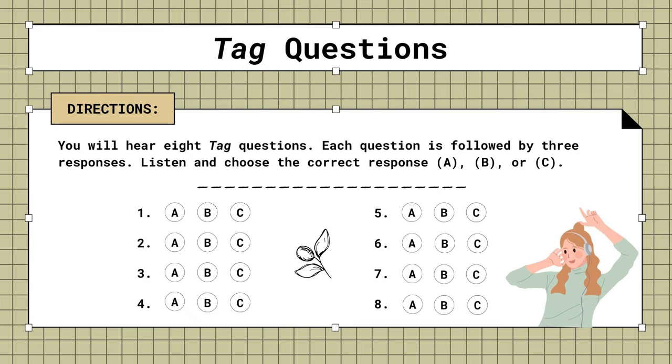1. The personnel manager's on vacation, isn't he? A. Yes, he'll be back next Monday. B. He said he had a great time. C. Is he at the station already?